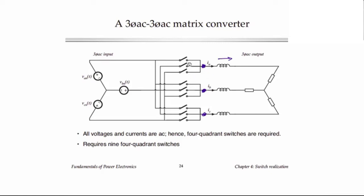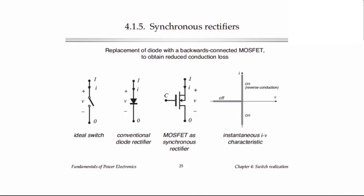This is a pretty interesting converter but it takes extended time to understand how to control these switches and synthesize the waveforms. Next is about synchronous rectifiers. We discussed the idea that a MOSFET is inherently a current bidirectional switch, and this property can be used in what is called a synchronous rectifier application, where we replace a diode with a MOSFET and take advantage of this reverse current capability. So if we need a single-quadrant switch with a diode-type characteristic, we can take the diode and replace it with a MOSFET in which current goes from source to drain instead of the normal drain to source.